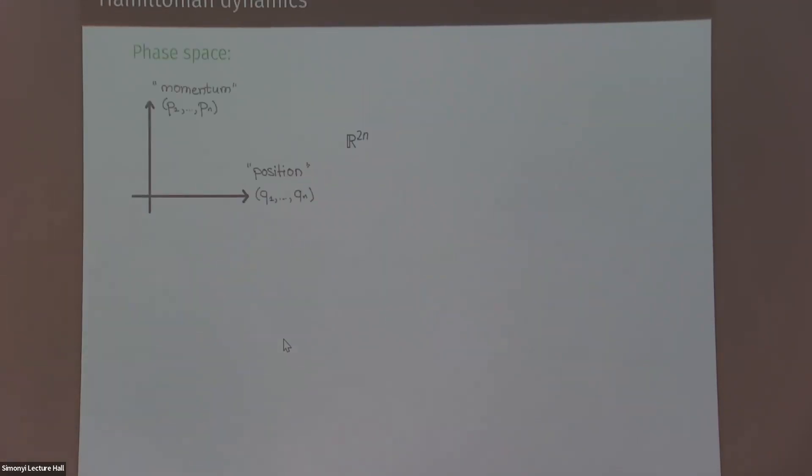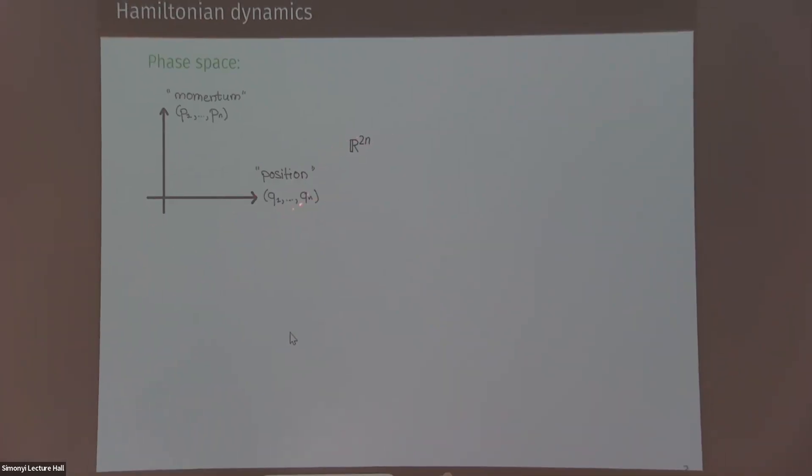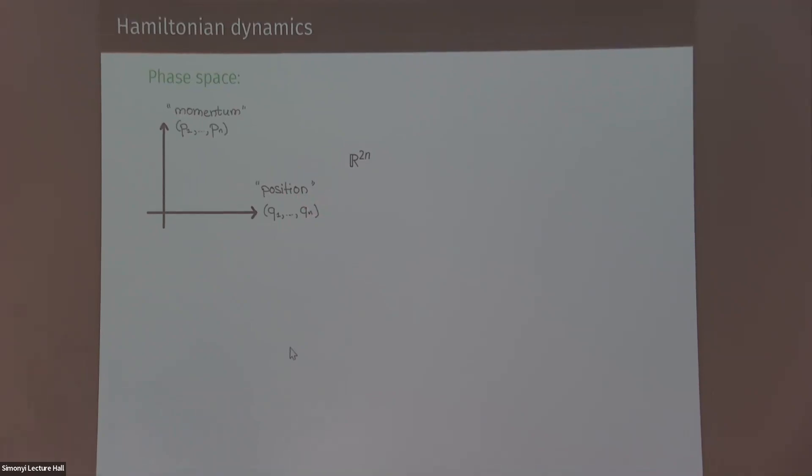In Hamiltonian dynamics we study phase spaces, which are typically R to 2N. We think of N of the coordinates as representing position of a certain particle and the other N are the momentum. On such spaces we look at functions H to R, we call them Hamiltonian functions. They represent energies of mechanical systems. So we think of them as, for example, a sum of kinetic energy and potential energy. Here I wrote the energy function for harmonic oscillator, just as an example.